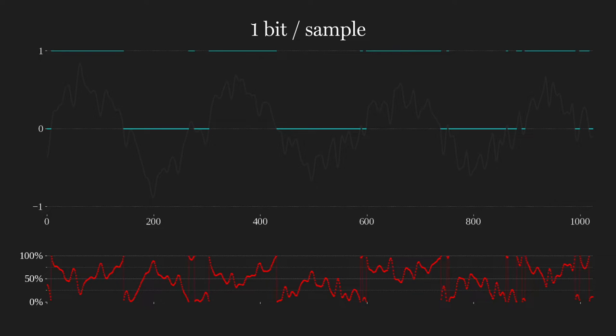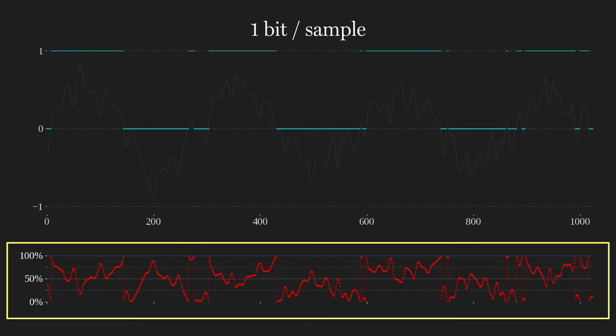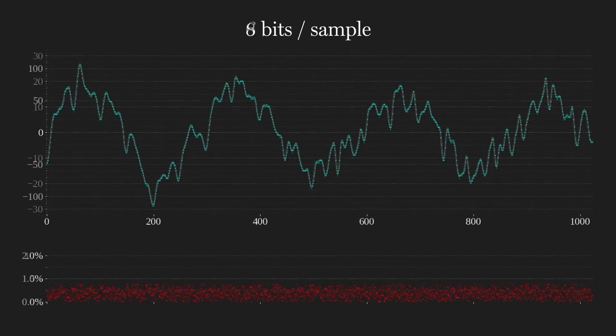It's kind of amazing that we can still hear the music using just one bit, where the average error per sample is 50%. But as you saw and heard, the fewer the bits, the greater the proportion of noise to the original signal. Conversely, as we add bits, the noise power decreases.